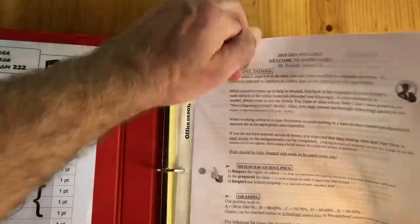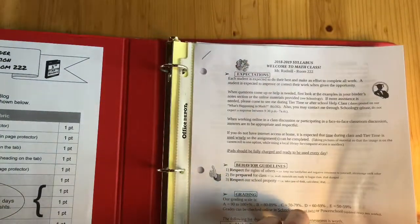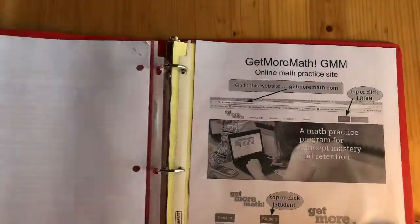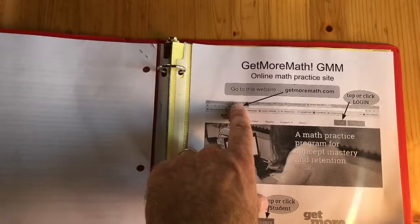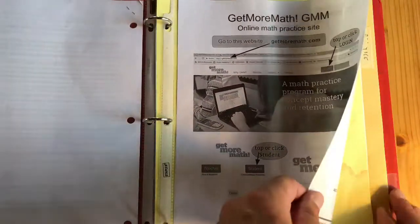Inside a page protector, this is how we flip it inside there. You should have your get more math page which eventually will include your username and password. Then on the back of that it's also in a page protector.